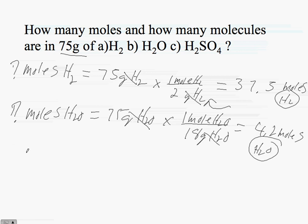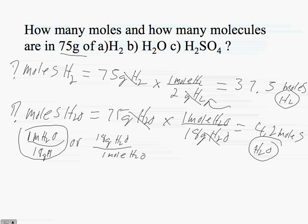Now one of the things that I tried to show you guys is that when you're looking at your relationships, your relationships can be in two ways. I can say for every 1 mole of H2O I have 18 grams of H2O, or I can say for every 18 grams of H2O I have one mole of H2O. Both these relationships are equivalent. What's important is how you use the relationship. In this particular instance I wanted grams of H2O to cancel out.